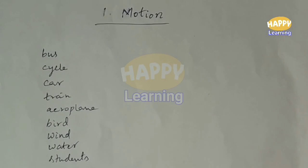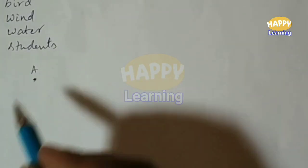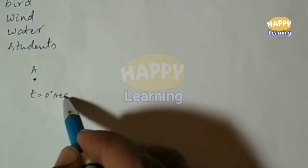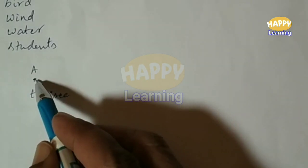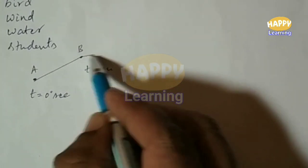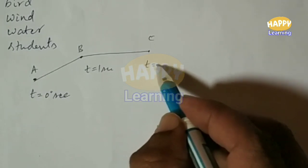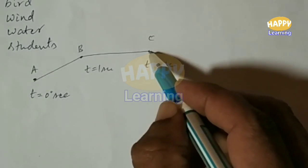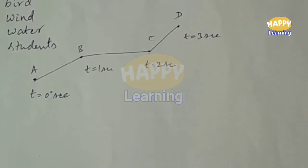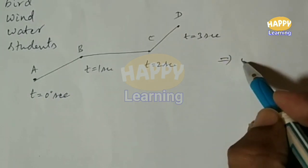The teachers also move from one class to another when the period is over. There is a person at point A, initially at time t equal to zero seconds. At t equal to zero he is at A, then he moved to point B by the time t equal to one second. Later, he moved to C in another second, then in the next second he moved to point D. Like that, this person is changing his position from time to time — he is said to be in motion.